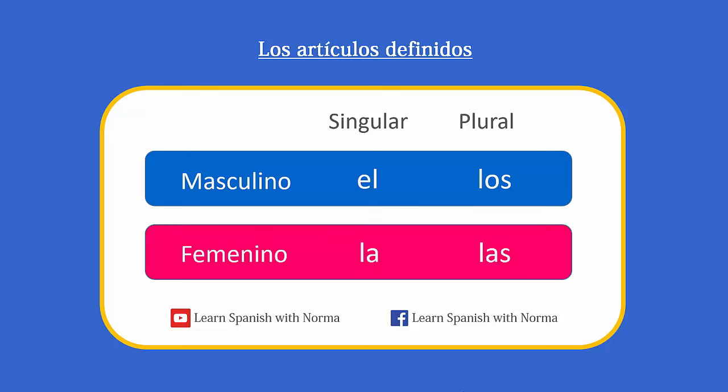For feminine singular nouns, we use the definite article la. For feminine plural nouns, we use the definite article las. The noun genders in Spanish are masculino y femenino. The noun numbers in Spanish are singular y plural. Now you know there are four definite articles in Spanish, because they tell us the gender and number of a noun.